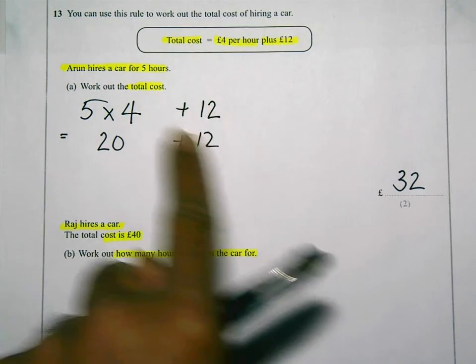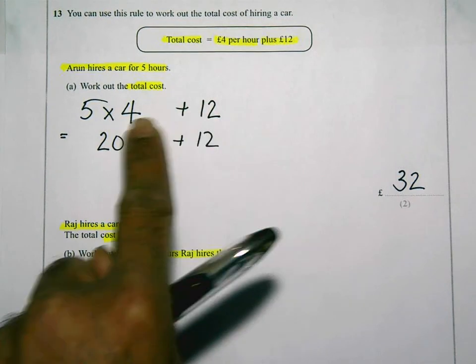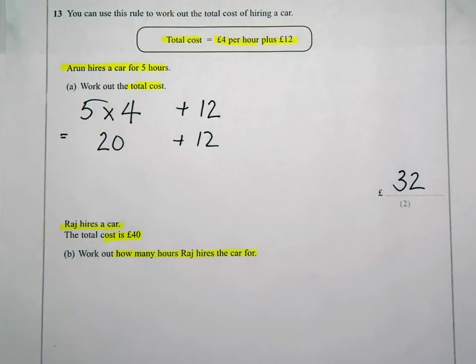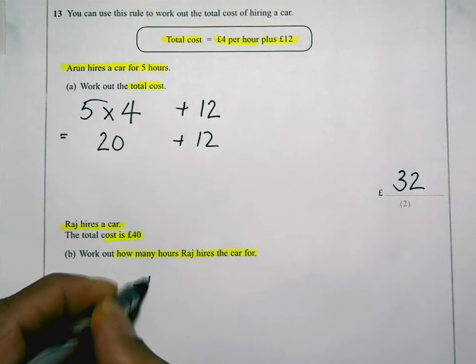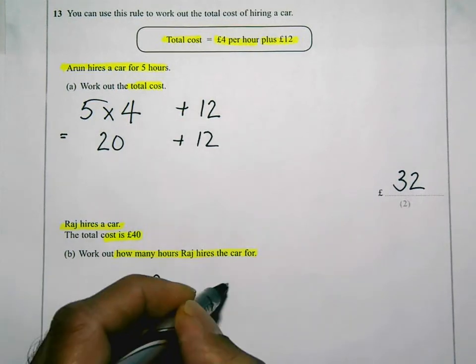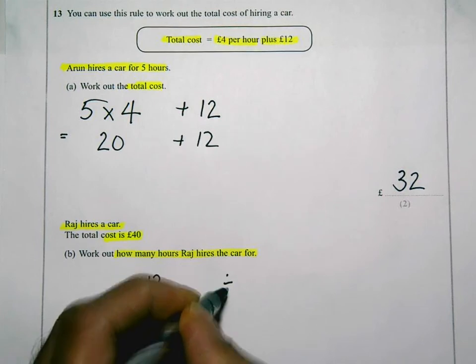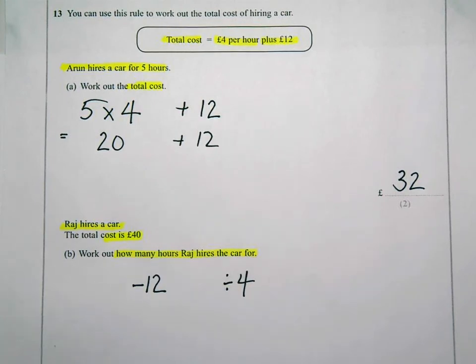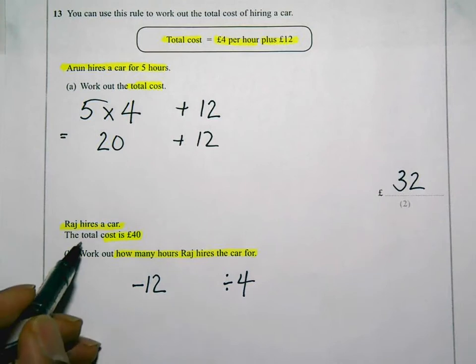So I need to do the opposite of adding on twelve, and then the opposite of times by four. So the opposite of adding on twelve is to take away twelve, and then the opposite of times by four is divide by four. The total cost of the hire in this case was forty pounds.